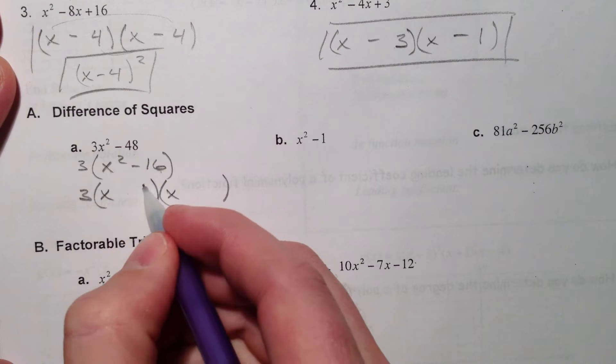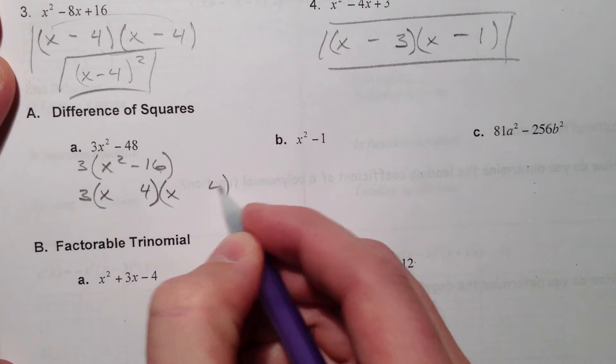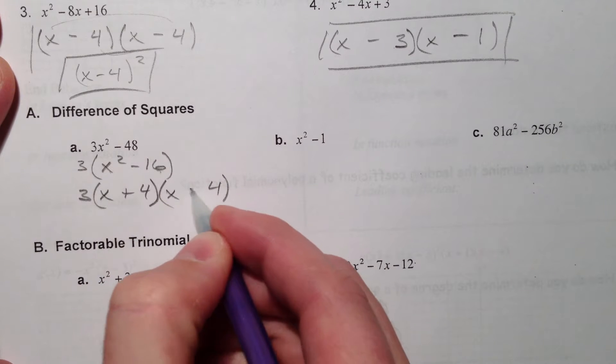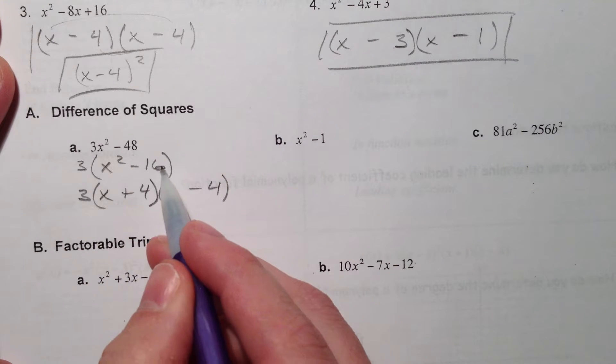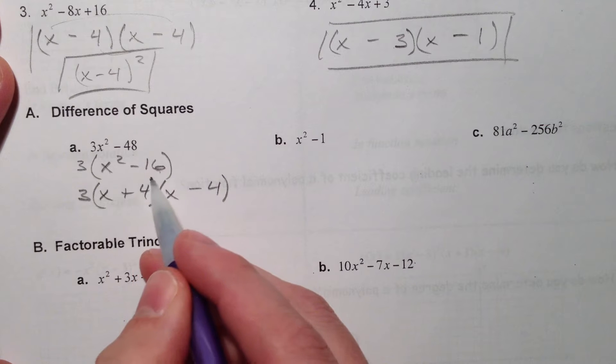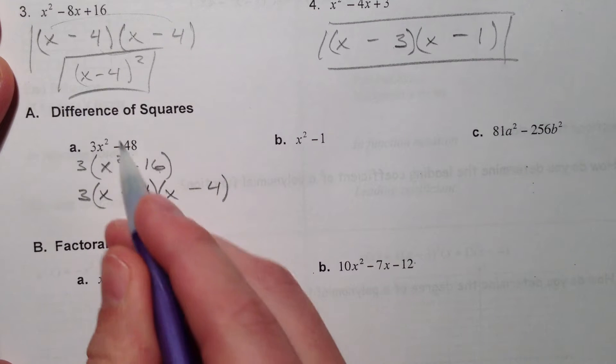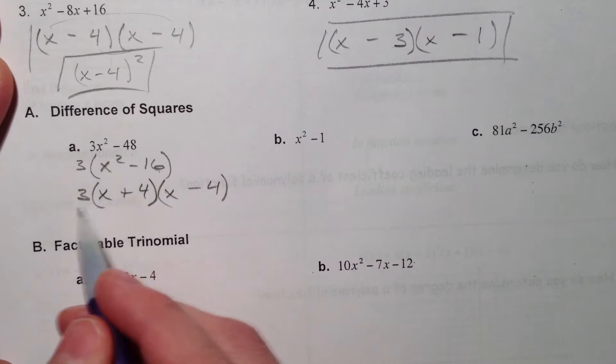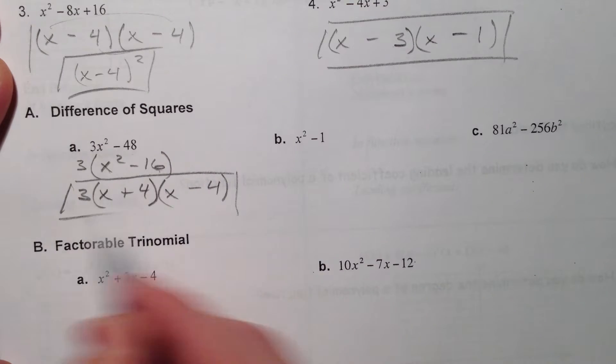It's got to multiply to a negative 16, so 4 times a negative 4. And so 4 times negative 4 is negative 16, and then plus 4x minus 4x adds to 0x because there's no middle term. And that's that factored.